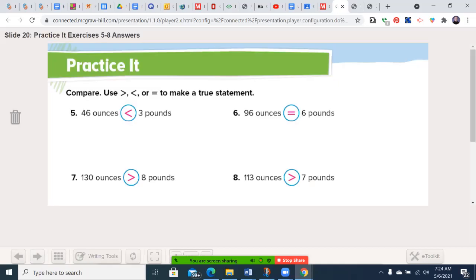Welcome back. Let's see how you did. 46 ounces is less than 3 pounds because 3 pounds is 48 ounces. 96 divided by 16 is 6, so those are equal. 8 pounds will be 128 ounces, so 130 is greater. And 113 will be slightly greater than 7 pounds.